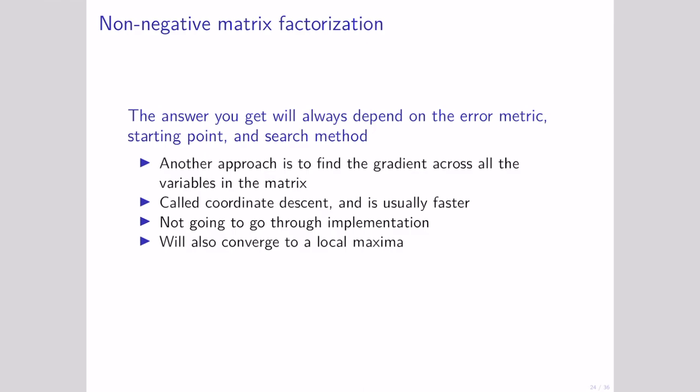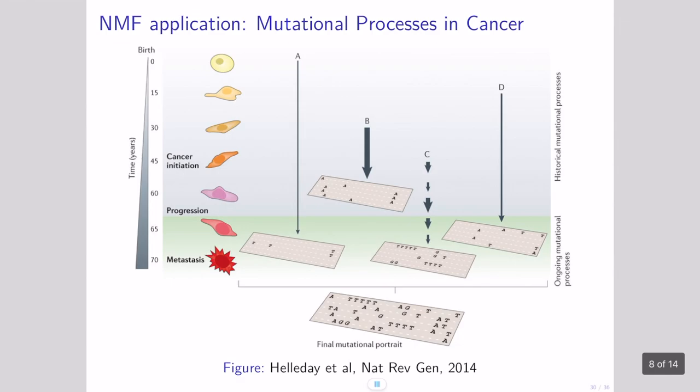We talked about the multiplicative method, but there are other methods. Another one is called coordinate descent, which calculates what direction to move in when changing values and then goes through a standard optimization approach to solve for a solution. This also converges to a local maximum, but depending on your problem may be a better way of solving. NNMF especially benefits from seeing an application where it's valuable, because NNMF — since it uses all non-negative values — works particularly well for processes that are additive, meaning the value of something always increases and is never decreased.